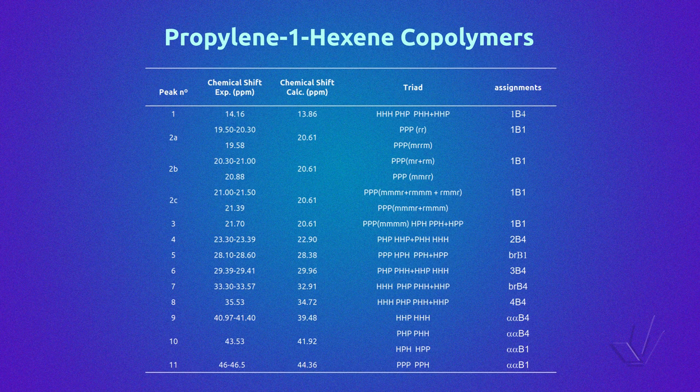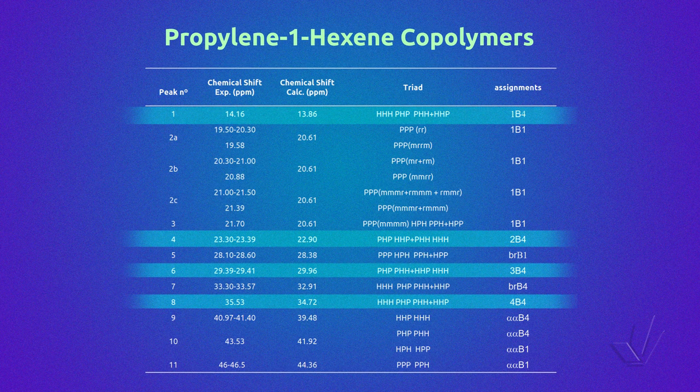This table was obtained in the same way as I have shown before for the ethylene-1-olefin copolymer. As it can be seen in the table, most of the peaks are due to multiple triads. For example, all the carbon atoms of the butyl branch named 1, 2, 3, and 4B4 have the same chemical shift for all the triads centered in hexene. This can complicate the quantitative determination of each triad. This type of copolymer can be treated in two different ways, depending on the amount of 1-hexene. In general, as 1-hexene is less reactive than propylene, in most cases the triads with consecutive sequences of this monomer are not present.